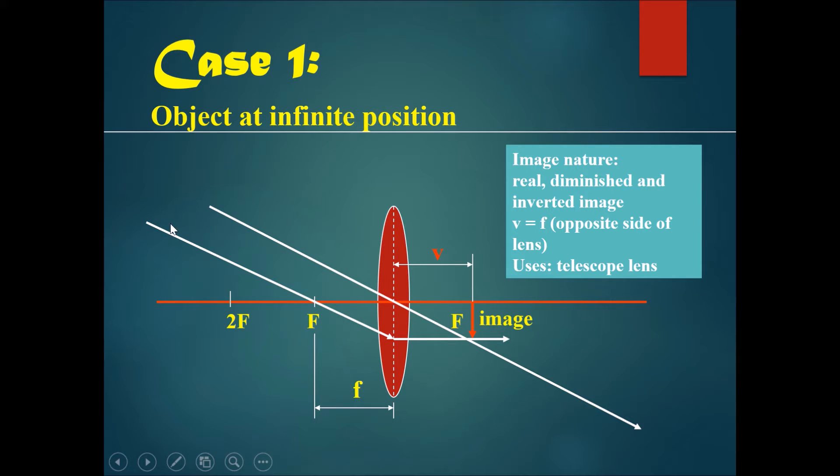Case number one is an object at an infinite position. Now this doesn't mean really infinite. However, it does mean that the object is very far away from the lens. This is a little bit like taking a picture of the moon.